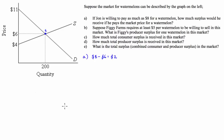Part B says: suppose Figgy Farms requires at least $5 per watermelon to be willing to sell in this market. What is Figgy's producer surplus for one watermelon? They're willing to sell a watermelon for $5, and the market price, as we saw in part A, is $6.